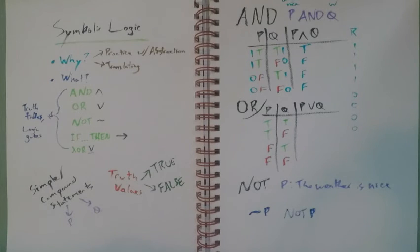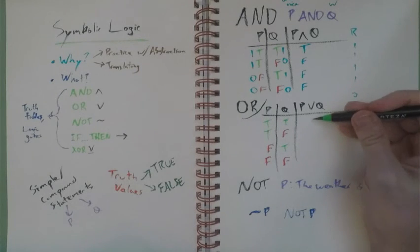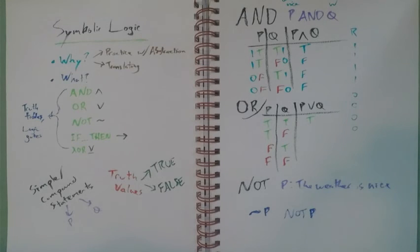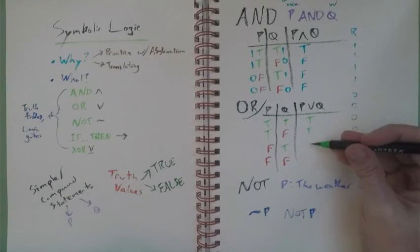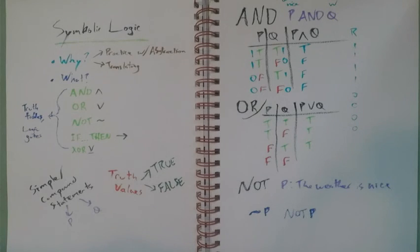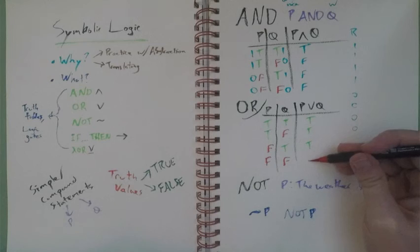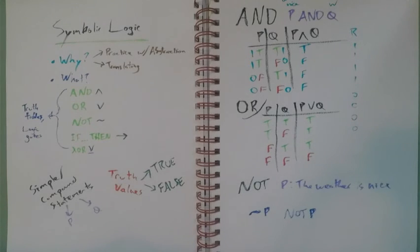So, what is the truth table of P or Q? Is the weather nice, or it's Wednesday? Well, if both are true, then P or Q is true. If one is true and the other is false, then P or Q is also true. And of course, if neither are true, then neither P nor Q is true. So, we couldn't say that P or Q is true.